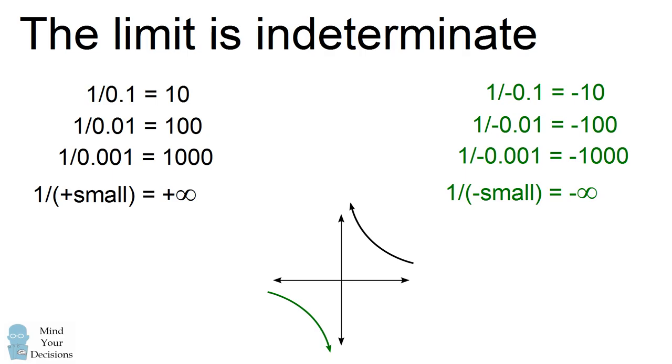So what happens when you divide exactly at zero? Well, the limit approaches both plus infinity and negative infinity. And therefore we say the limit is indeterminate and that's another problem with dividing by zero.